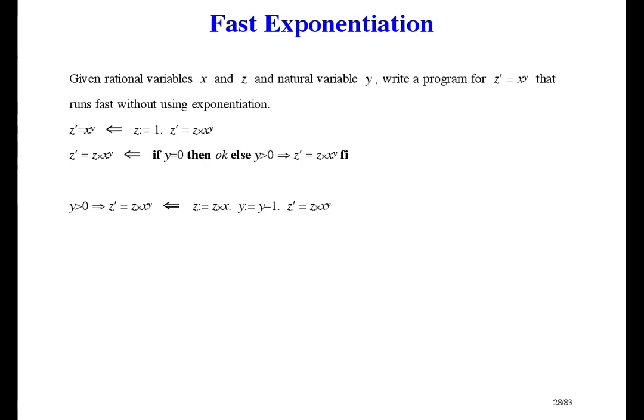When Y is even there's a way to cut it in half, so the first improvement is to modify that last refinement by dividing into even and odd cases. Given that Y is greater than 0, if it's even then it's even and greater than 0; else it's odd and greater than 0 — but I don't need to say greater than 0 because 0 is even. Now we have two specifications to refine: first the even case.